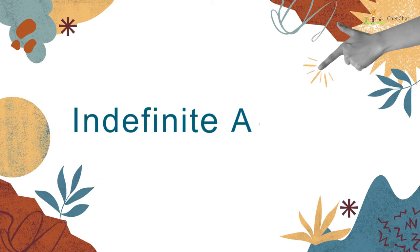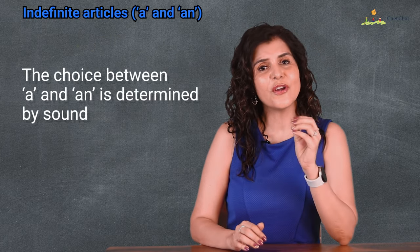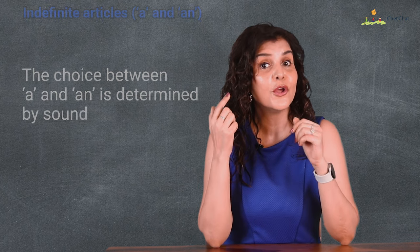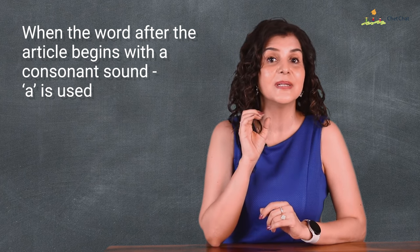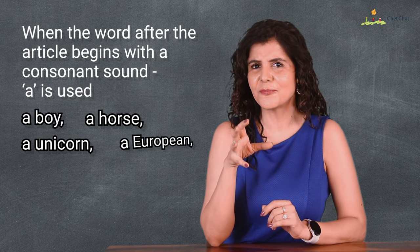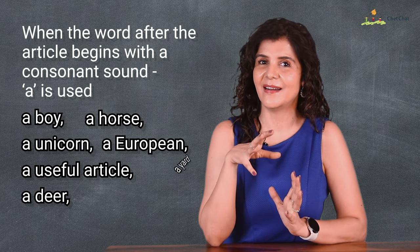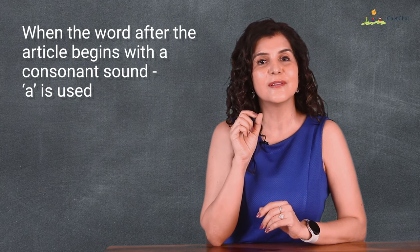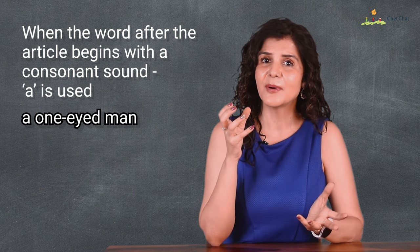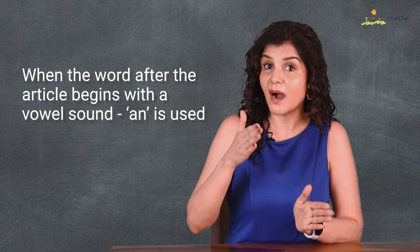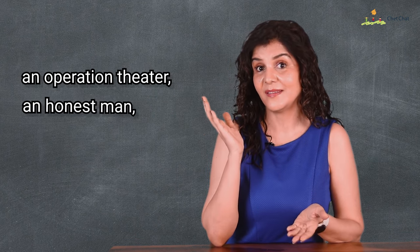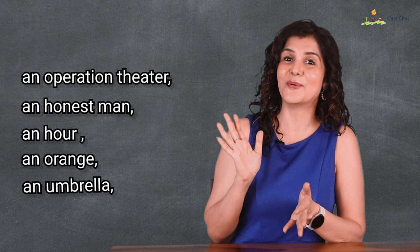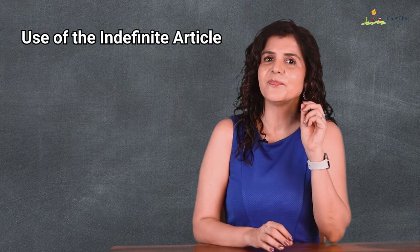Now let's deep dive into indefinite articles a and an. The choice between a and an is determined by sound. When the word after the article begins with a consonant sound, a is used — for example: a boy, a horse, a unicorn, a European, a useful article, a deer, a one-eyed man. When the word begins with a vowel sound, an is used — for example: an operation theater, an honest man, an hour, an orange, an umbrella, an ink pad.